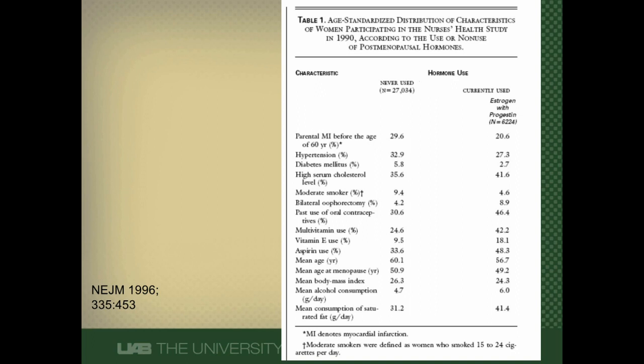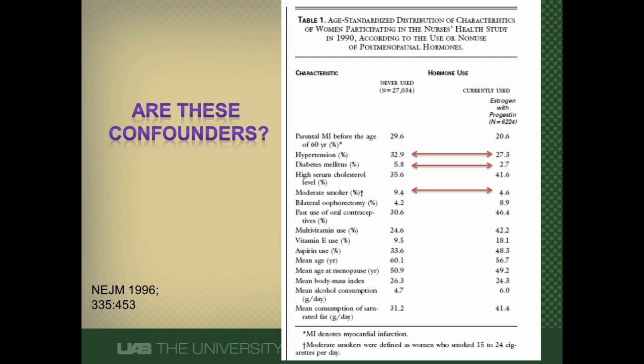This is Table 1 of the Demographics Table of the Nurses' Health Study, an observational study in postmenopausal women looking at hormone replacement therapy and its effects on cardiovascular disease. I have a group of women who had never used hormones and a group who are currently using hormones. Here are three cardiovascular risk factors — consider whether they are confounders using the criteria from the previous slide.